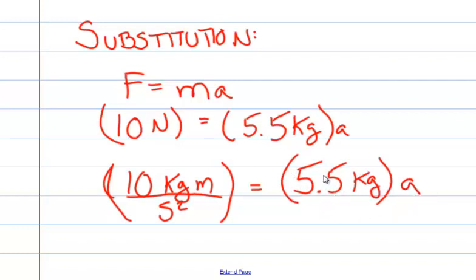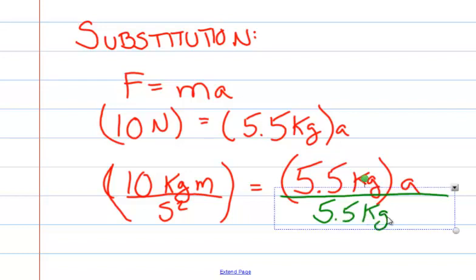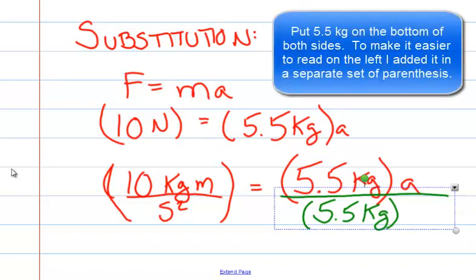How do we get 5.5 kilograms alone on this side? We need to divide by 5.5 kilograms to get acceleration alone. To do the same on the other side, we put 5.5 kilograms on the bottom.